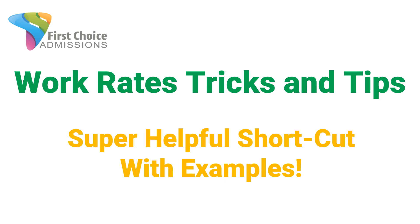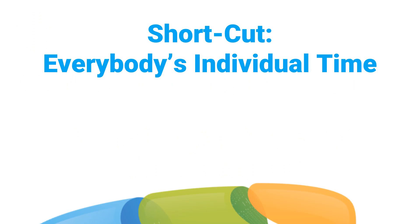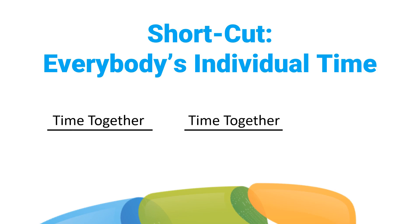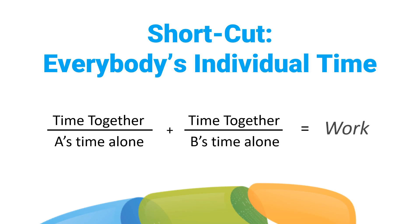Let me show you this super helpful work rate shortcut. It's incredibly effective when you're given the time it takes for everyone to do the job individually. Make one fraction for each person or machine working. Put the time working together on the top of each fraction, and each individual's time alone on the bottom. Add the fractions together and set the whole thing equal to the amount of work you're trying to get done.